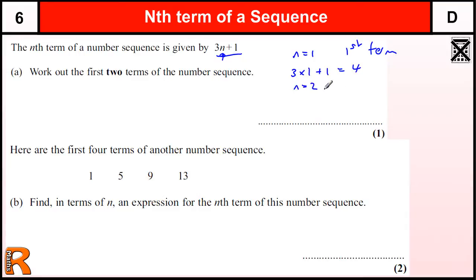When n equals 2, that's the second term, so 3 times 2 plus 1 is going to be 6 plus 1 equals 7.